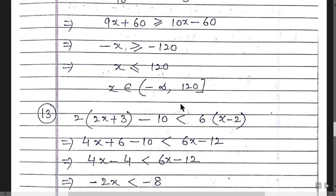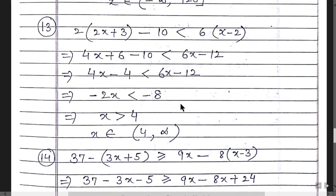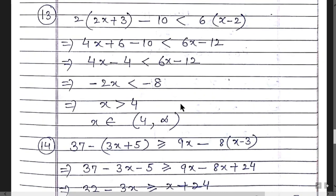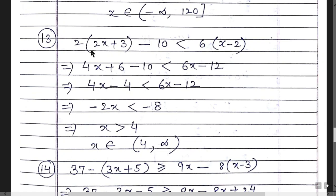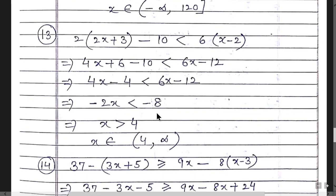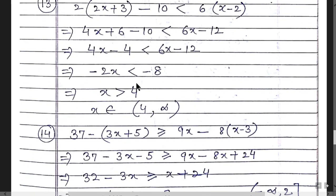Question 13: 2(2x + 3) - 10 < 6(x - 2). Expanding: 4x + 6 - 10 = 4x - 4 on the left, and 6x - 12 on the right. Rearranging: 4x - 6x < -12 + 4, giving -2x < -8. Dividing by -2 and flipping the sign: x > 4. The answer is (4, ∞).